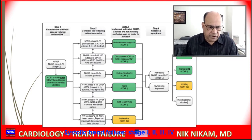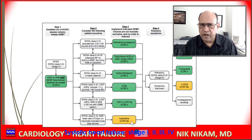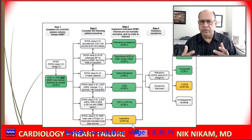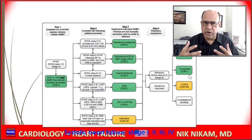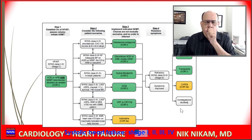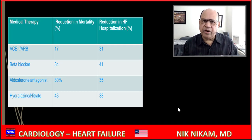For Class 3 or 4 heart failure with a heart rate greater than 70, you can use ivabradine, which maintains the sinus rate below 80 and helps optimize cardiac function. When all these measures fail, consider palliative therapy, workup for transplant, or a left ventricular assist device, and possibly investigational drugs.